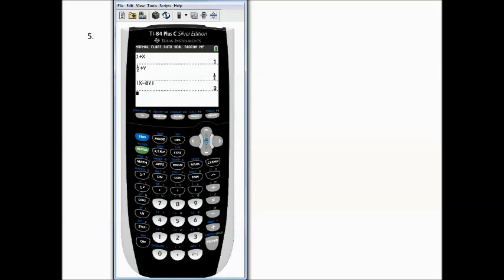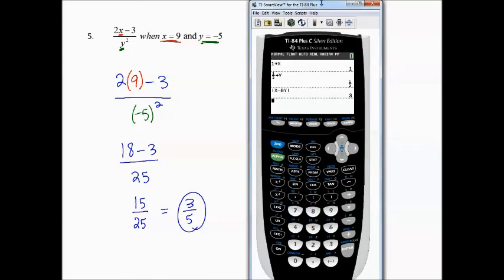Let's check it out with the calculator. First we'll store our new values. 9, store x, and -5, store y. Now let's make a fraction. Alpha, y equals, enter. In the numerator is 2x - 3. 2x - 3, and in the denominator is y². Alpha, y², enter. And it shows us 3/5, just like we got.